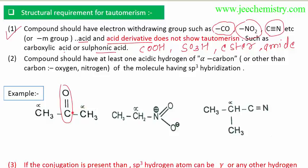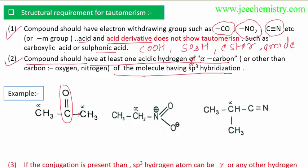The second point is that the compound should have at least one acidic hydrogen on alpha carbon atoms. The alpha carbon atoms must have acidic hydrogen, and the alpha carbon must be sp3 hybridized — other than carbon, oxygen, or nitrogen of the functional group. We should consider that the compound must have at least one acidic hydrogen on alpha carbon atoms with sp3 hybridization.